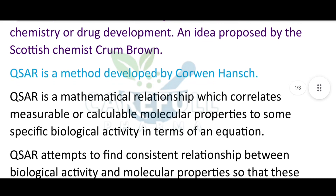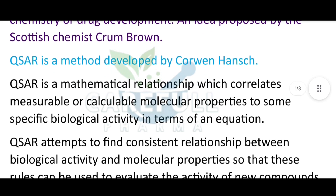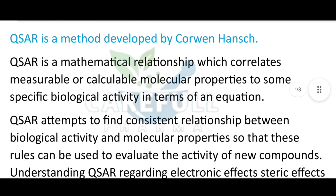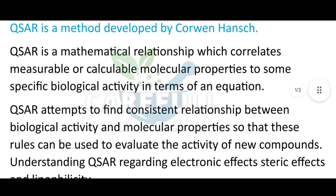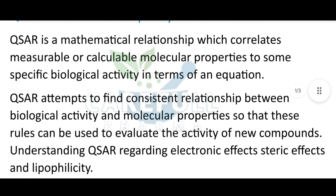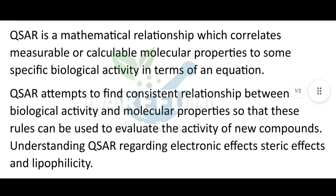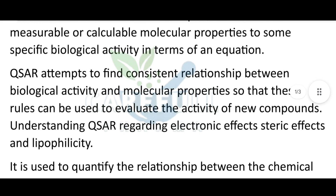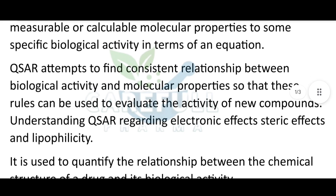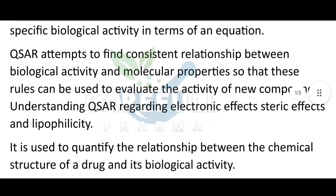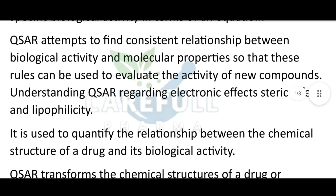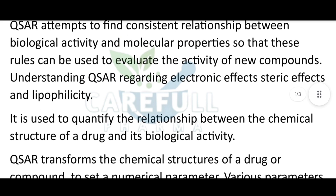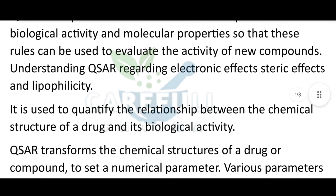An idea proposed by the Scottish chemist Crum Brown, QSAR is a method developed by Corwin Hansch. QSAR is a mathematical relationship which correlates measurable or calculable molecular properties to some specific biological activity in terms of an equation. QSAR attempts to find consistent relationships between biological activity and molecular properties so that these rules can be used to evaluate the activity of new compounds.